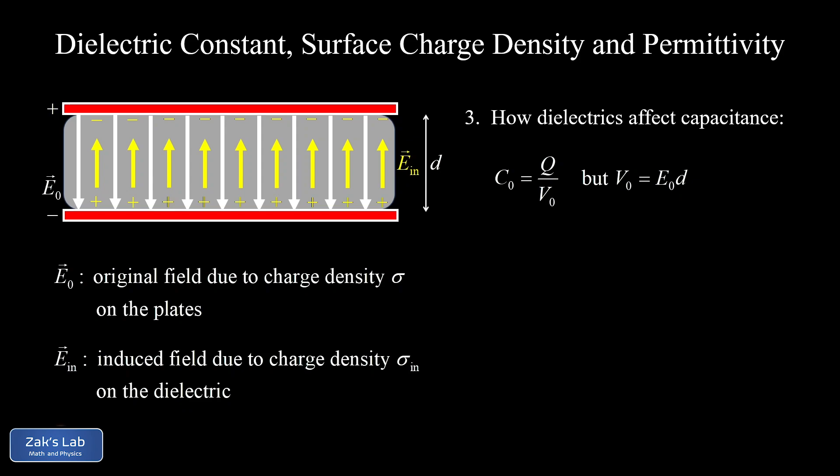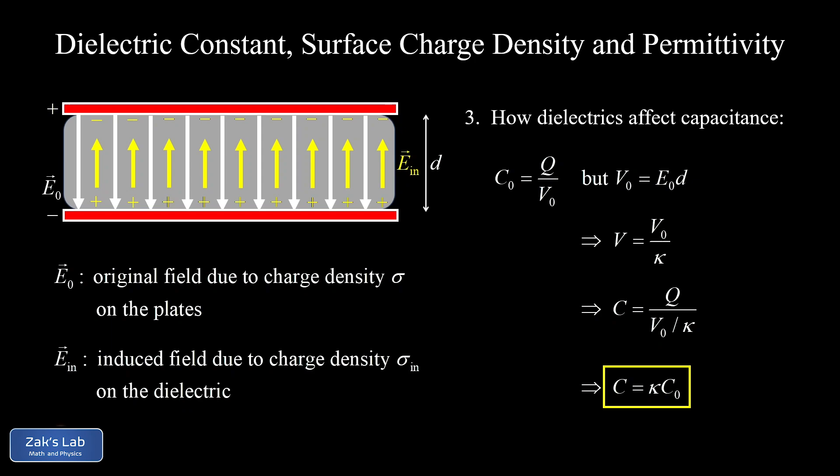Once we put the dielectric in, it reduces the electric field by a factor of kappa, and therefore the voltage reduces by a factor of kappa as well. Our new voltage between the plates is V0 divided by kappa. Since the charge on the plates is not changing, we calculate the new capacitance by substituting in the new voltage. After a little algebra, our new capacitance is kappa times the original capacitance. Knowing that dielectric constants are greater than one, putting a dielectric between the plates of a capacitor actually increases the capacitance.